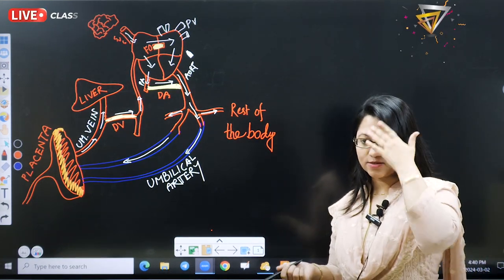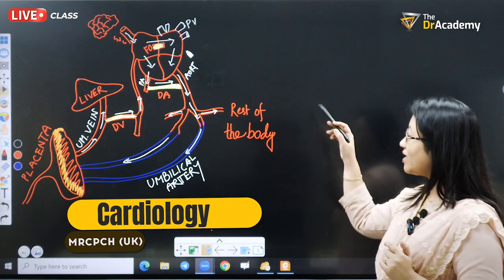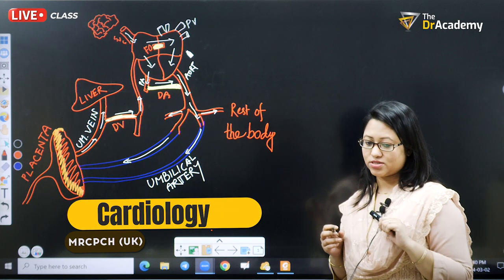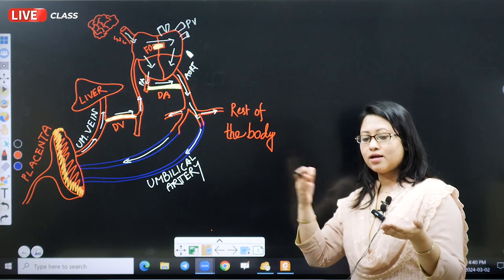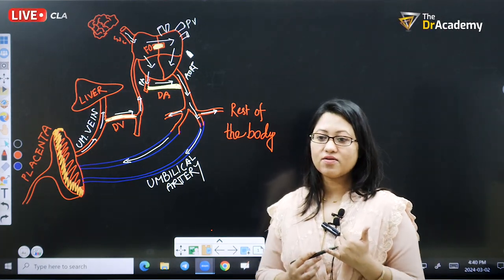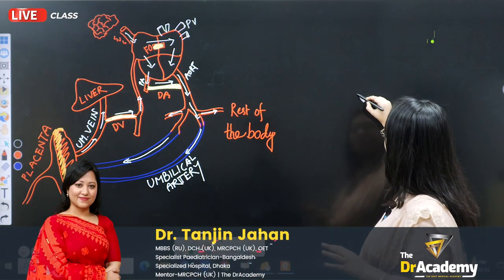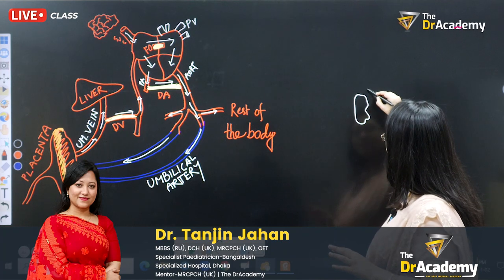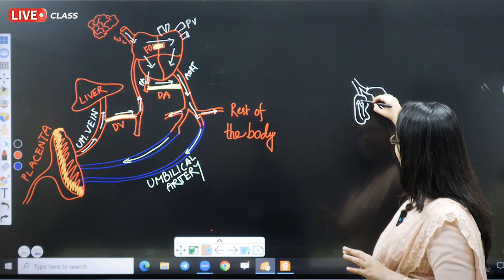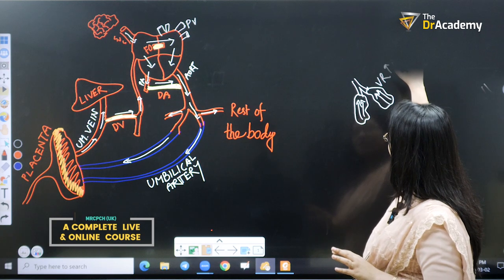This is an important topic for the theory and science part in cardiology: fetal circulation. In fetal circulation, the lung is not working at all. Imagine that in the fetal stage, the lung is of no use — there is lots of fluid in the alveoli, and that is why vascular resistance is very high.